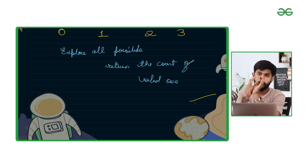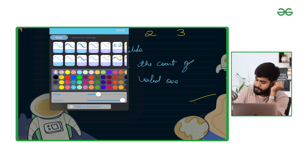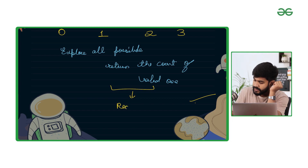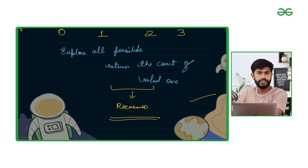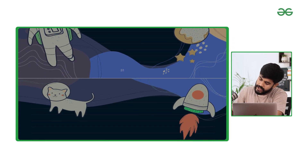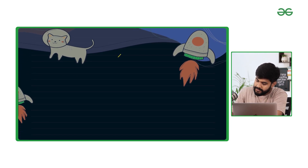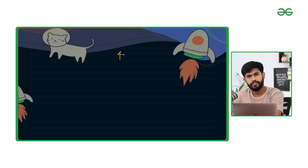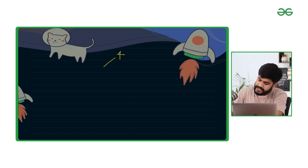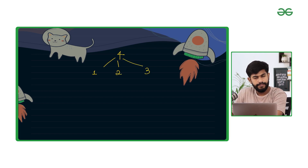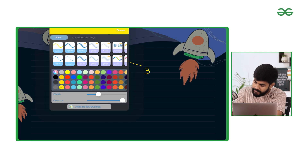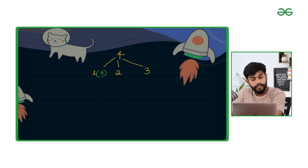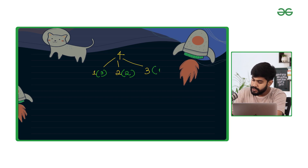Whenever you come to the conclusion that we need to explore all possible ways, this is nothing but recursion. Now let's talk about recursion. If we need to calculate the value for 4, either I can take a jump of 1 — then the remaining value would be 3. Or I can take a jump of 2 — the remaining value would be 2. Or I can take a jump of 3 — the remaining value would be 1.